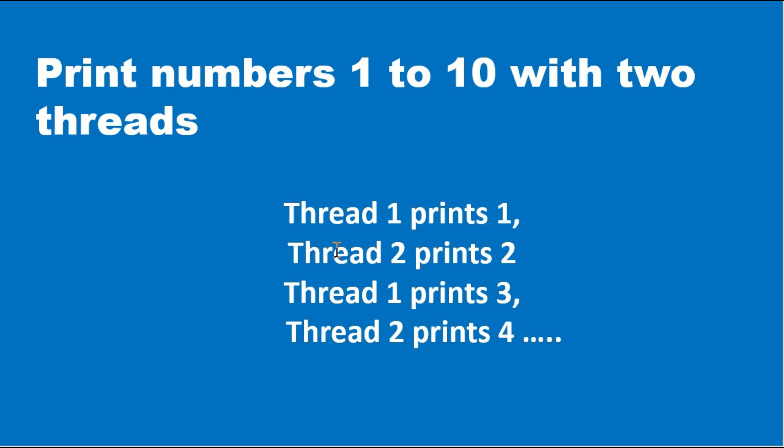The task is to print one to ten with two threads — thread one prints one and thread two prints two, and so on sequentially. They will ask some questions about threads, mostly about multi-threading synchronization: what is notify, what is wait, and how threads can be implemented. Based on those questions, the interviewer may choose this coding test on threads.